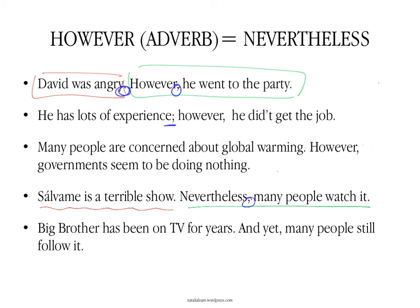One final possibility, a very similar one: you could say, Big Brother has been on TV for years, and yet many people still follow it. As you can see, we could have said 'however' or 'nevertheless' — and yet is another option. Maybe you use 'and yet' when you want to emphasize how surprising it might be — it has a sort of more surprising element to it than 'however' or 'nevertheless.'